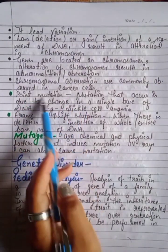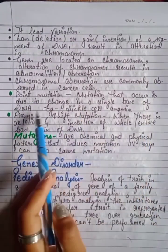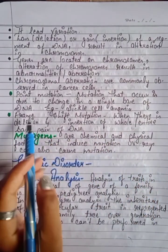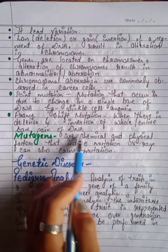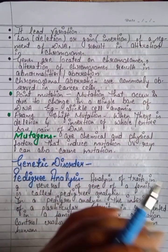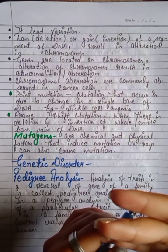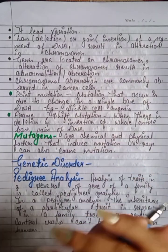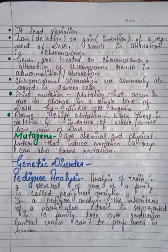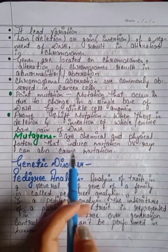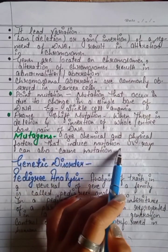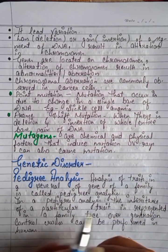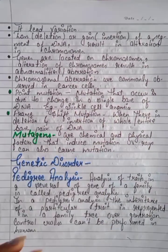Point mutation: a mutation that occurs due to a change in a single base pair of DNA. Frame shift mutation: when there is deletion or insertion of one or more base pairs of DNA, the reading frame shifts. Mutagens are chemical and physical factors that induce mutations. UV rays can also cause mutation.